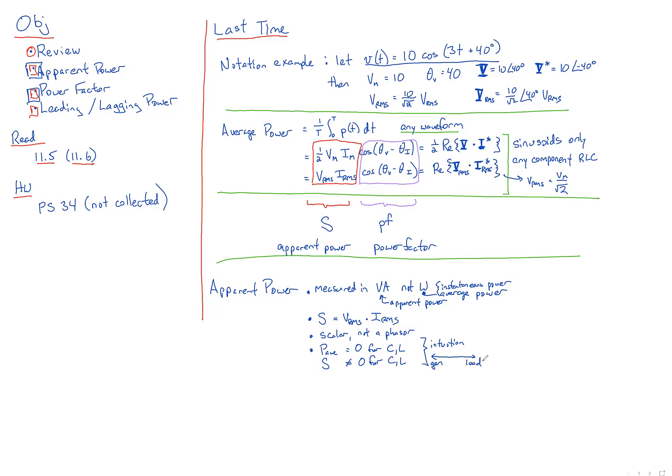If you've got a pure capacitor at the end, it's not going to generate any average power, but it will shuttle power back and forth between the power lines of the generator and the load constantly. The power company does not like you to shuttle power back and forth across its power lines, because it's going to be losing energy across its own lines. So the apparent power is what the power company charges you for. Even if you've got a very inductive load using up absolutely no average power, you're still going to get charged, because the power company loses power along its transmission lines as it shuttles energy back and forth.